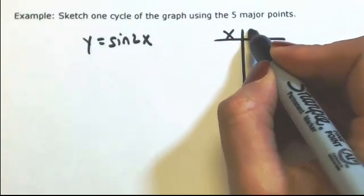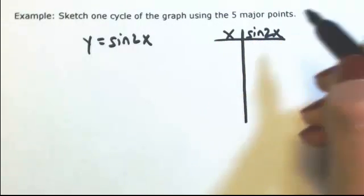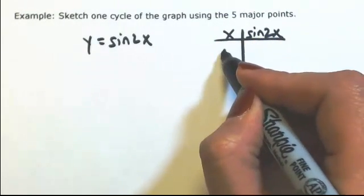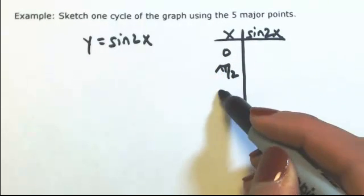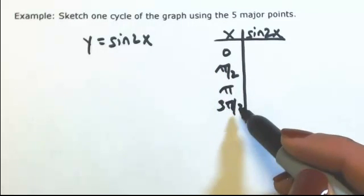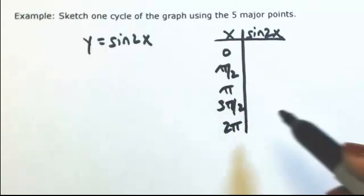Let me get some ordered pairs using the unit circle. So the right side we have 0 radians, at the top is pi over 2, left side is pi, bottom is 3pi over 2, and then back where you started at 2pi.